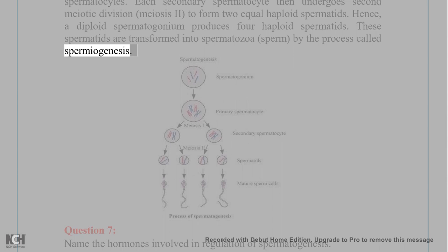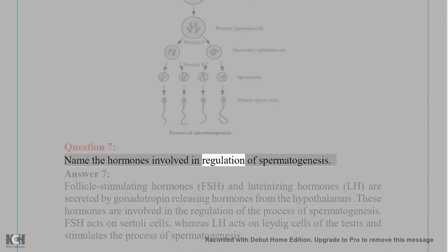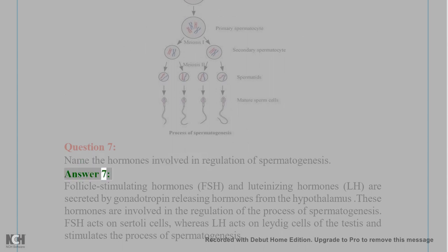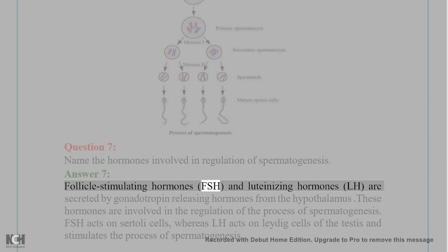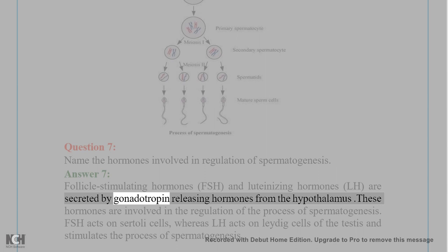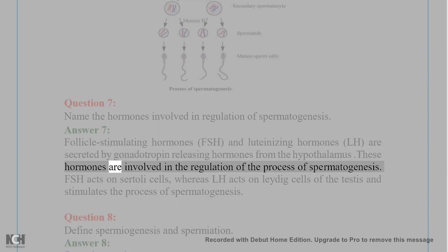Question 7: Name the hormones involved in regulation of spermatogenesis. Answer 7: Follicle-stimulating hormone (FSH) and luteinizing hormone (LH) are secreted under the influence of gonadotropin-releasing hormones from the hypothalamus. These hormones are involved in the regulation of the process of spermatogenesis.